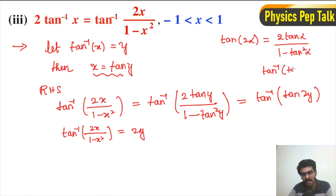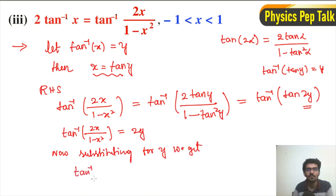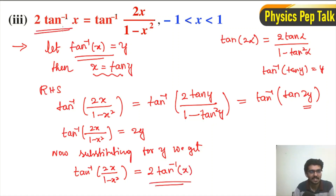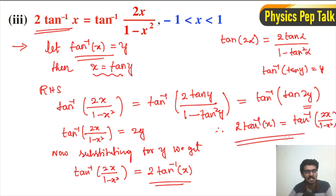Using the property that tan inverse of tan y is equal to y, substituting 2y we get tan inverse of 2x divided by 1 minus x square is equal to 2y. Now substituting for y, we get tan inverse of 2x divided by 1 minus x squared is equal to 2 into tan inverse of x. Therefore we have proved that 2 tan inverse of x is equal to tan inverse of 2x divided by 1 minus x squared. This is the required result.